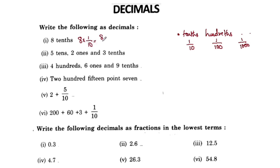8 by 10: the denominator has one zero. Let's move the decimal point to the right. Now we have to write the answer. This is 0.8.